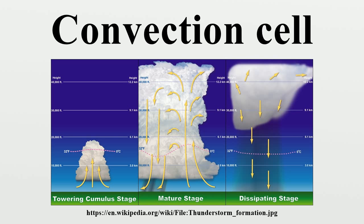The fluid begins to descend. As it descends, it warms again through surface contact or conductivity and the cycle repeats. Air warms, becomes less dense, rises. Then air cools, becomes more dense, sinks. Then cool air settles at the bottom.